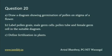The first question is: draw a diagram showing germination of pollen on the stigma of a flower. Part B asks about pollen grains, male germ cells, pollen tube and female germ cells — these are all parts of the flower which you can label in the diagram. It is a very important question for board exams, so go through and revise.